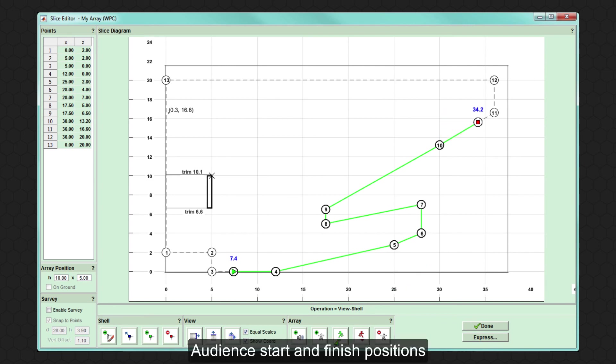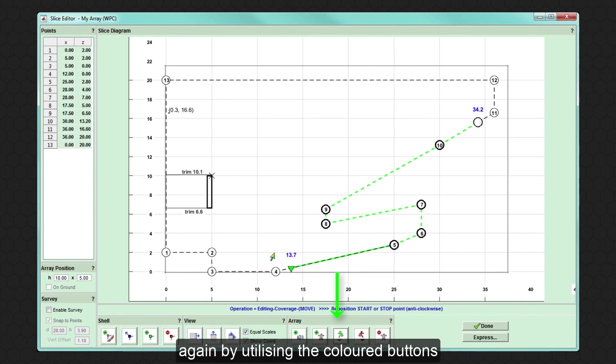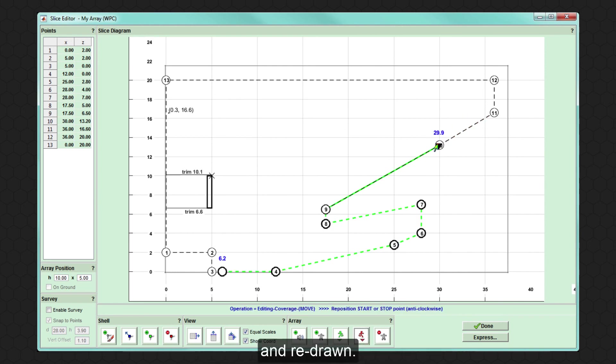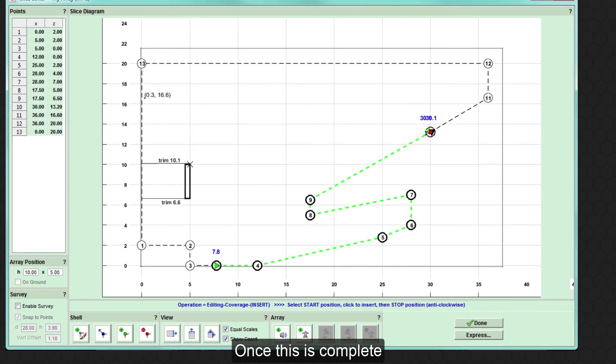Audience start and finished positions can be adjusted again by utilizing the colored buttons and dragging the cursor to the appropriate location. Equally, the entire area can be removed and redrawn. Once this is complete, either click done and move on to the coverage tab or use the express setup option.